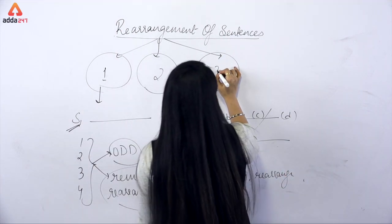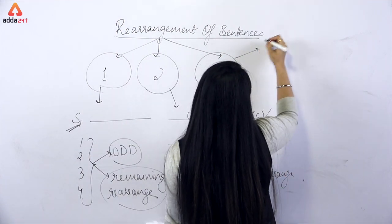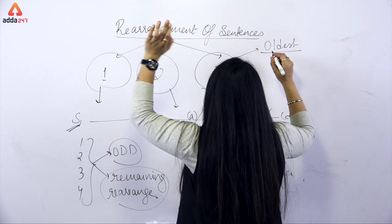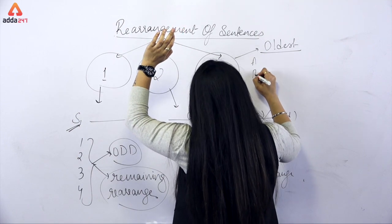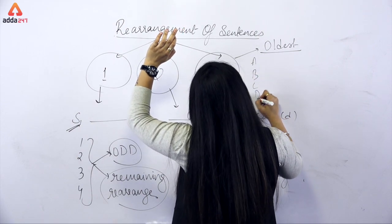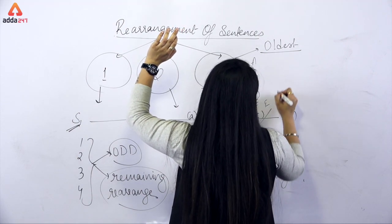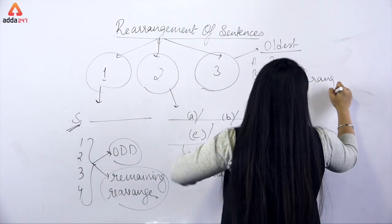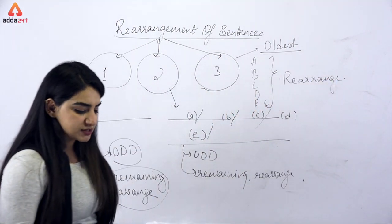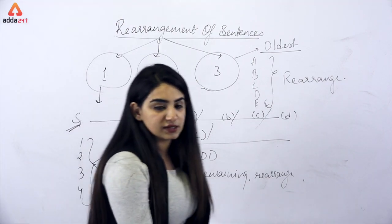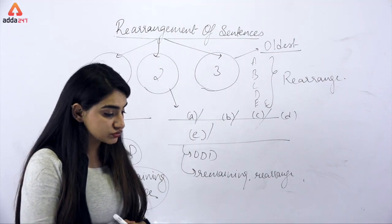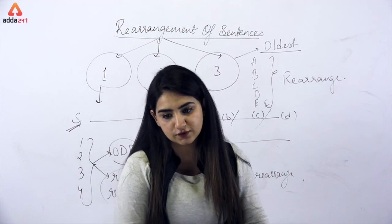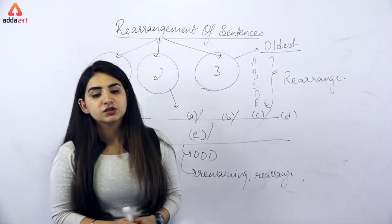The last and oldest pattern is where five to six sentences are given and you have to rearrange the whole format — the entire passage needs to be rearranged. Let's begin with this and have our first question on screen. Let's solve the first question.